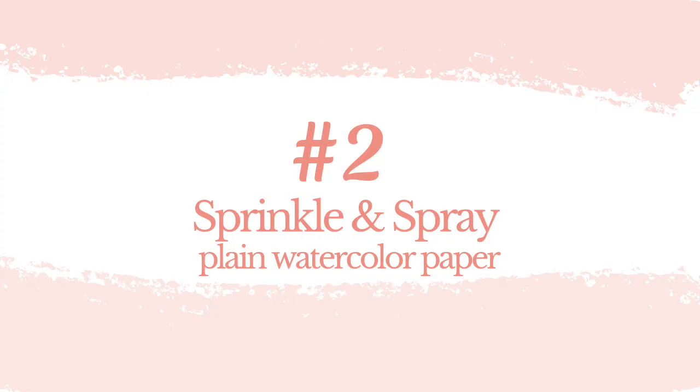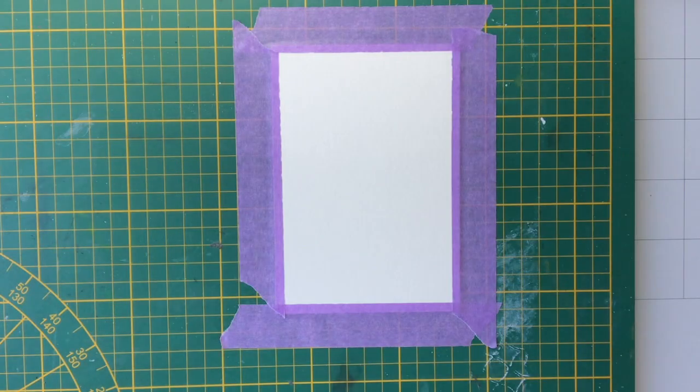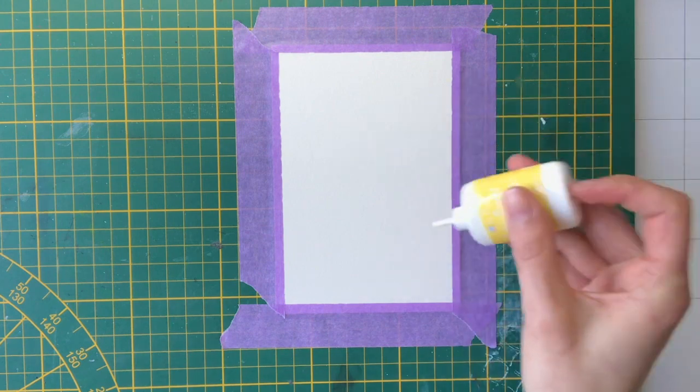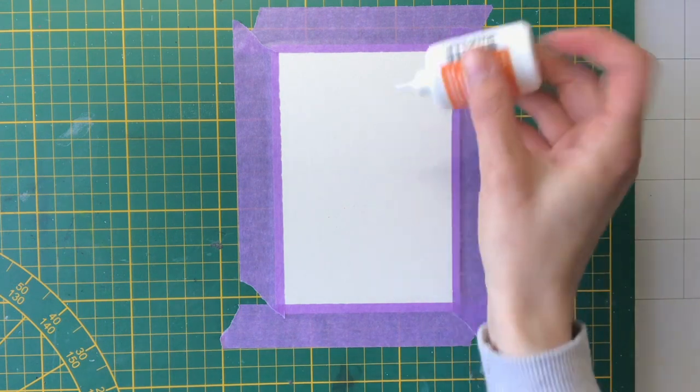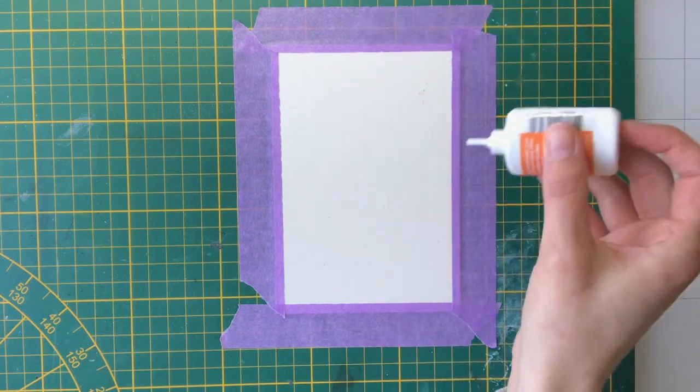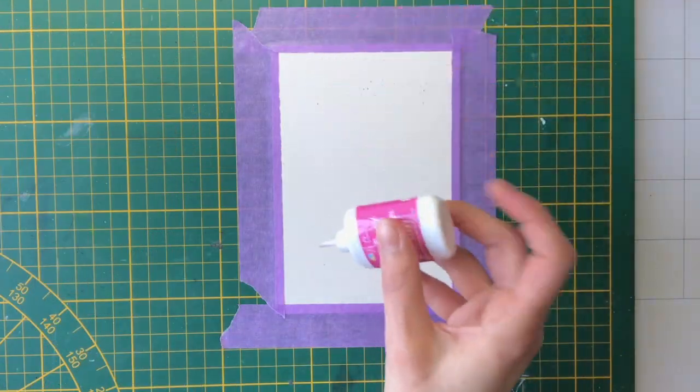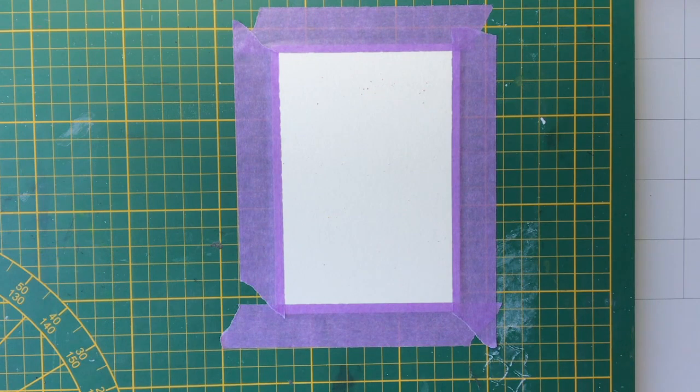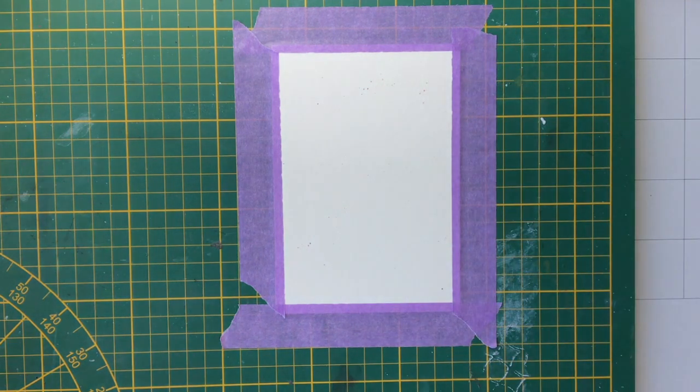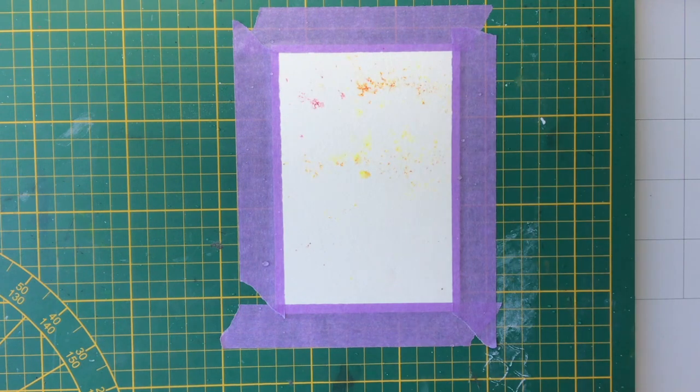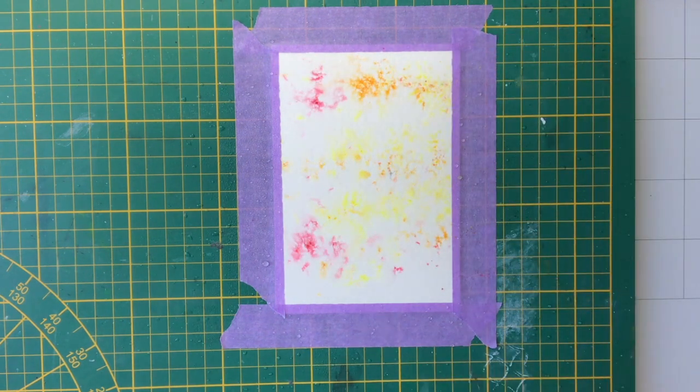The second technique is the sprinkle and spray technique on plain watercolor paper. I'm using the sunrise colorburst set from MFT. I have taped the watercolor paper down to a surface, but to be honest you don't really have to do that. I'm tapping the bottles lightly because as I mentioned earlier, these powders are really concentrated, so a lot of color will come from a little bit of powder.